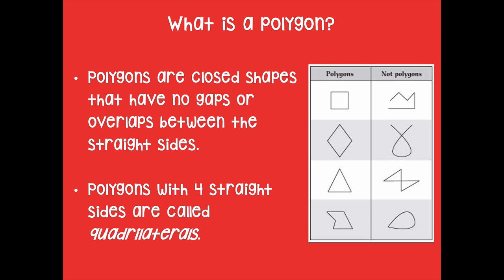Polygons with four straight sides are called quadrilaterals, and the word 'quad' means four. I like to remember this by thinking of an ATV — sometimes called a quad — because it has four wheels. That helps me remember that a quadrilateral has four straight sides.